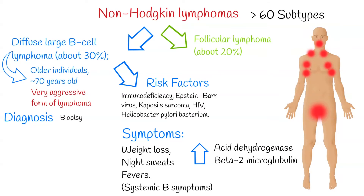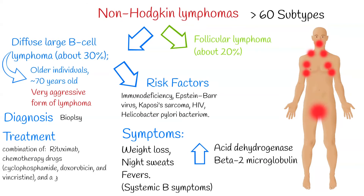Treatment: first-line therapy consists of a combination of rituximab, chemotherapy drugs cyclophosphamide, doxorubicin, and vincristine, and a glucocorticoid, either prednisone or prednisolone. After treatment, return of the disease called relapse occurs within the first three years of diagnosis.